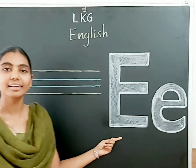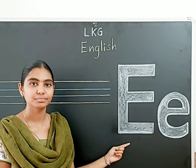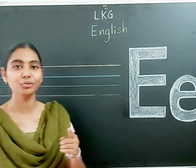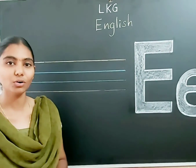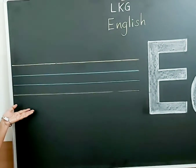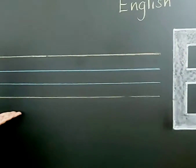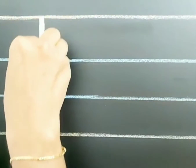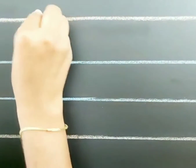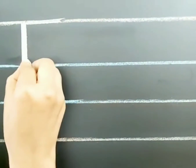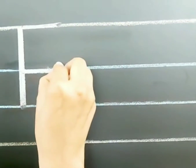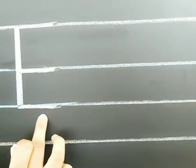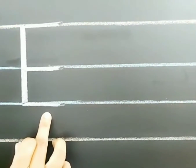The sound of the letter E is 'e'. Okay, so let's see how to write letter E. Take your English class notebook and your pencil. Now we are going to write capital E. For writing capital E, we have to start from the red line. Standing line, sleeping line, again sleeping line, and again one sleeping line. This is capital E.